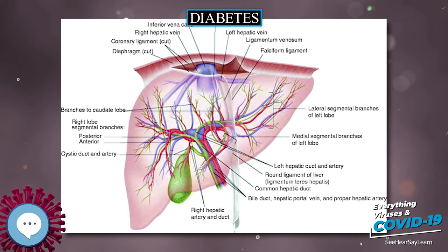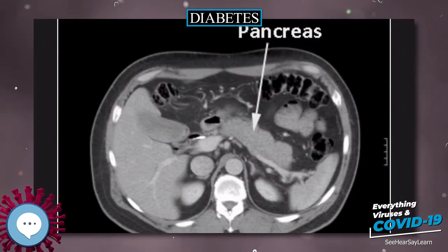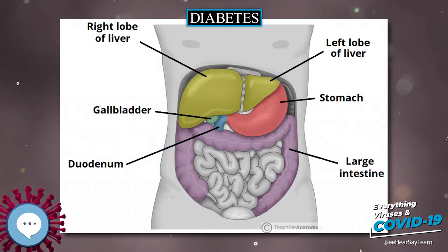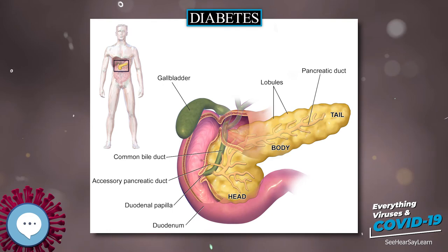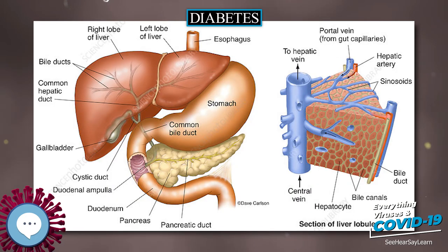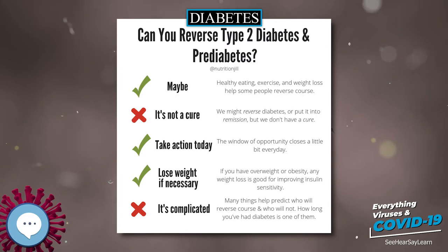Type 2 diabetes is primarily due to lifestyle factors and genetics. A number of lifestyle factors are known to be important to the development of type 2 diabetes, including obesity (defined by a body mass index of greater than 30), lack of physical activity, poor diet, stress, and urbanization. Excess body fat is associated with 30% of cases in those of Chinese and Japanese descent, 60–80% of cases in those of European and African descent, and 100% of Pima Indians and Pacific Islanders. Even those who are not obese often have a high waist-hip ratio.